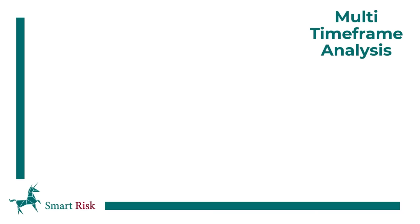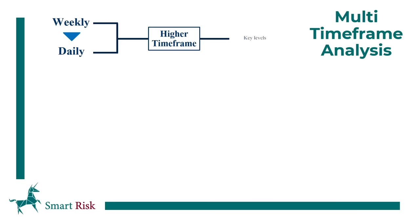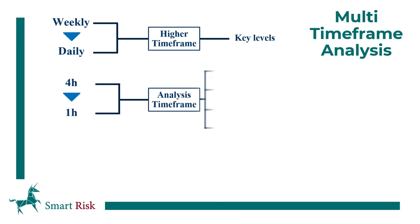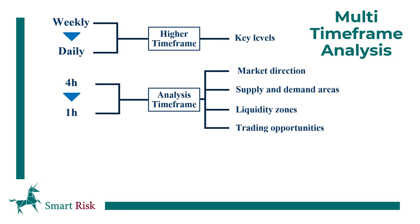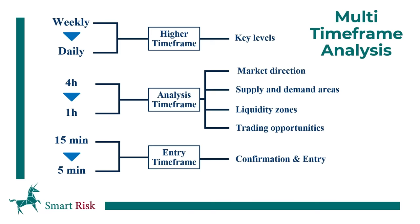We consider three types of timeframes in our chart analysis. Starting from higher timeframes: first, we have weekly and daily, which we only use to identify higher timeframe key levels of market structure. Second, we use the four-hour and one-hour timeframes to do most of the analysis, including identifying market direction, supply and demand areas, order blocks, liquidity zones, and trading opportunities. Third, we use 15-minute and 5-minute timeframes if we need more confirmations and entry reasons in lower details.